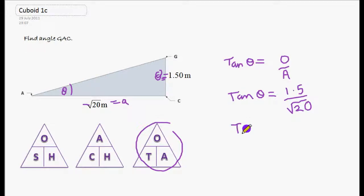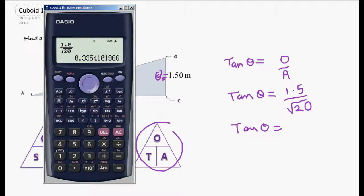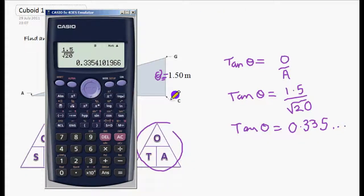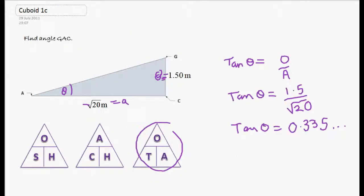So tan theta equals—sorry, I just lost the calculator—0.335. Now we want to find out what the angle is. We've got tan of the angle equals this. We want to inverse the tan of the angle. So we take our answer and we do inverse tan of it. And we get 18.54 degrees.